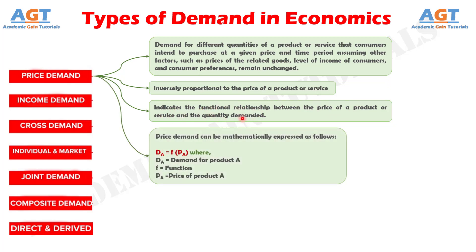Price demand can be mathematically expressed as: D(A) = f(P(A)), where D(A) represents demand for product A and P(A) represents price of product A. So the equation of price demand stands: demand for product A equals function of the price of product A.